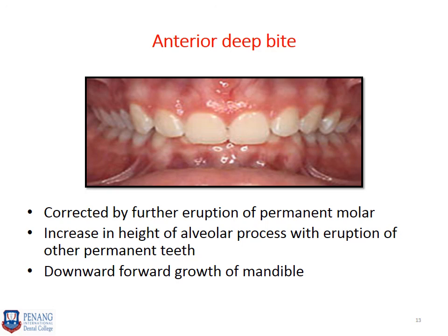Anterior deep bite is corrected by the eruption of the permanent molars. Once the permanent molars erupt and come into occlusion, the deep bite is corrected. There is an increase in the vertical height of the alveolar bone process with eruption of the permanent teeth. As the alveolar bone height increases, the anterior deep bite reduces due to the increased vertical dimension. Additionally, downward and forward growth of the mandible occurs, which further corrects the anterior deep bite.